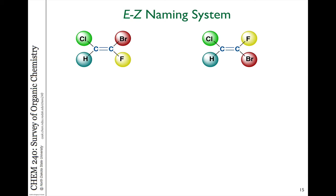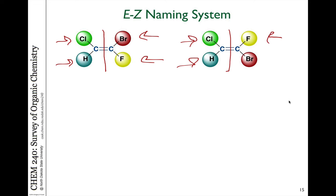However, there are situations when we have double bonds where there are four different groups attached. If you look at either side of this double bond, on the left side there's a hydrogen and a chlorine, and on the right side there's a bromine and a fluorine. These are stereoisomers of each other — the fluorine and bromine have been switched relative to the molecule on the left. When we want to try to name this, we can't use cis and trans because it becomes ambiguous. We need a systematic way to identify which groups are on the same or opposite sides.